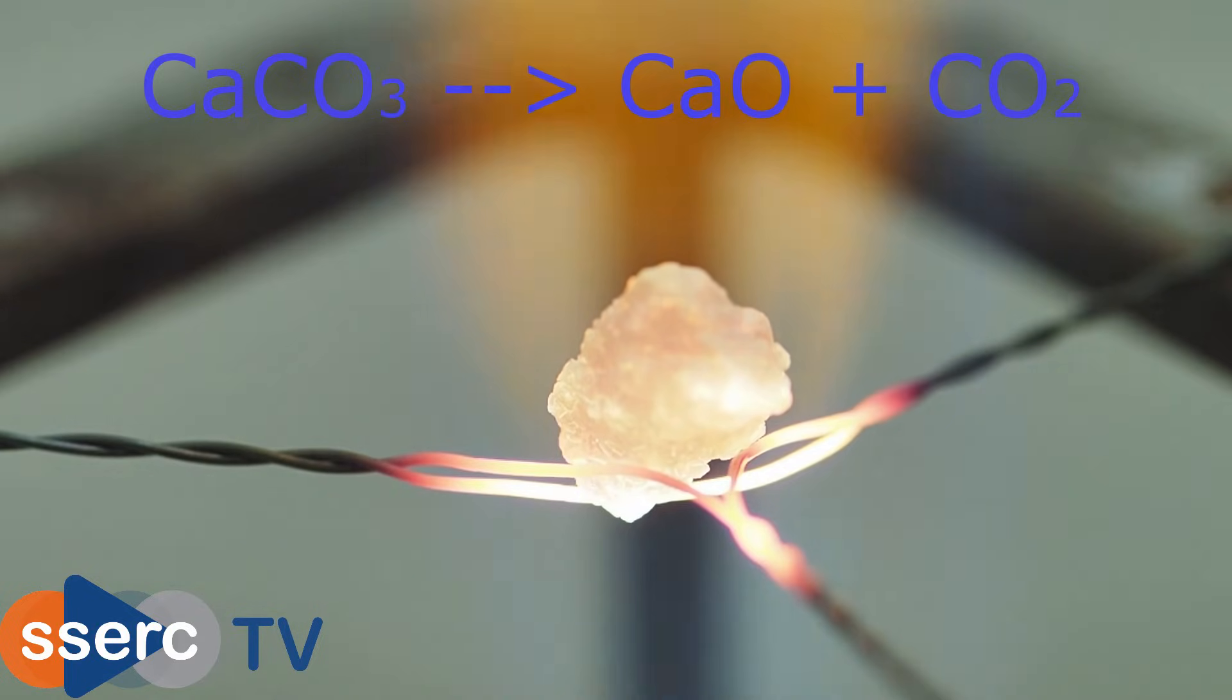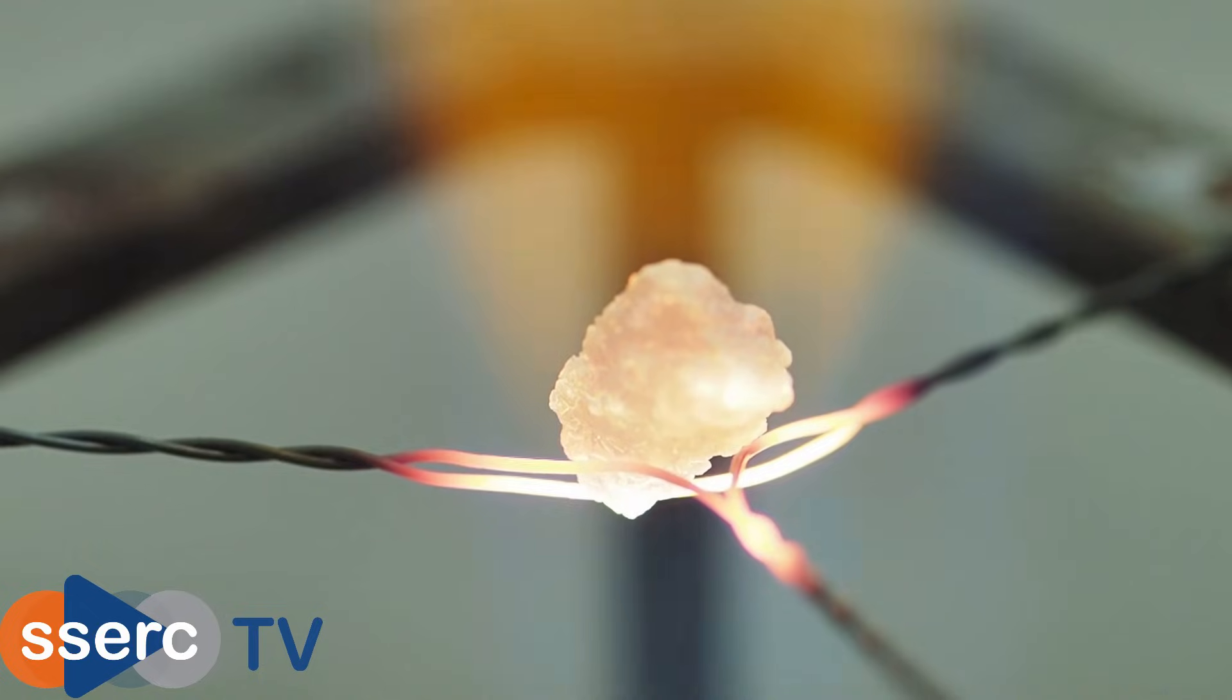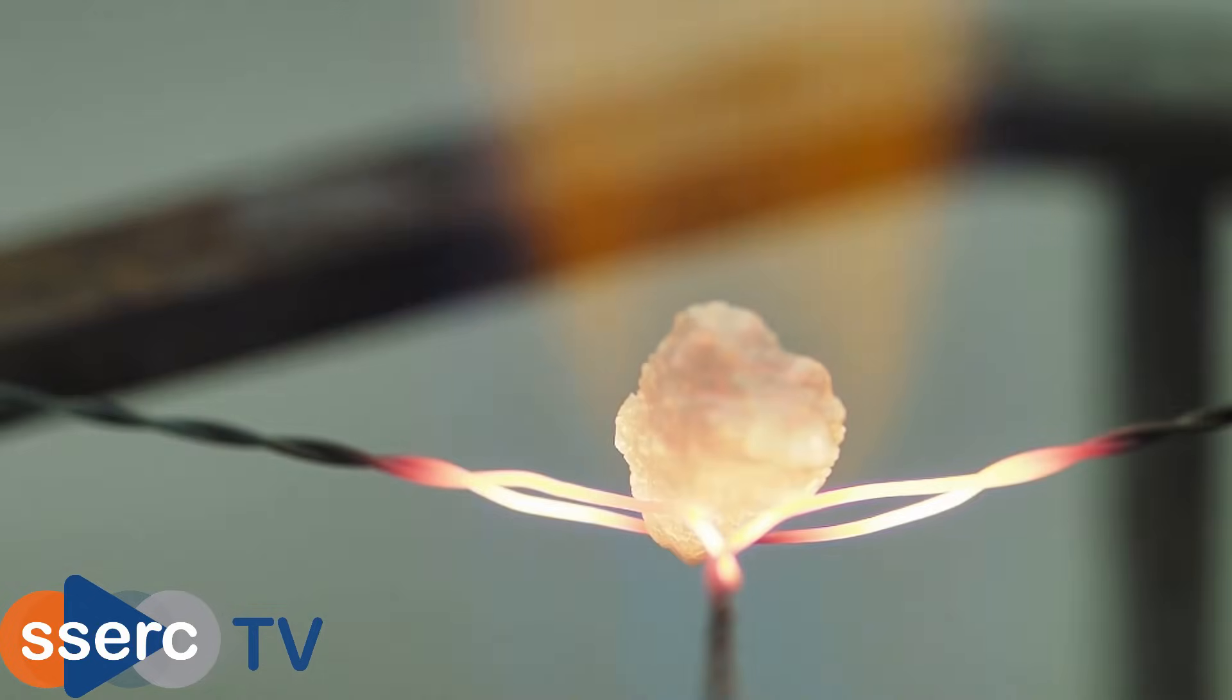The heat is causing the calcium carbonate to decompose and it's producing calcium oxide, this used to be known as lime. When heated strongly, lime gives off a bright white light and in fact this was used as an early form of artificial light in the theatre, and the word limelight is still in use today.